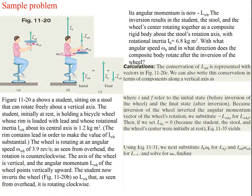A student is sitting on a stool that can rotate freely about a vertical axis. Initially at rest, he holds a bicycle wheel whose rim is loaded with lead and whose rotational inertia I_wh is 1.2 kg·m². The wheel is rotating at 3.9 revolutions per second — as seen from overhead, the rotation is clockwise. The student then inverts the wheel so that its angular momentum, as seen from overhead, is now rotating clockwise — he flips the wheel downward, causing the angular momentum to be in the opposite direction.